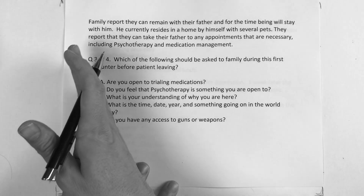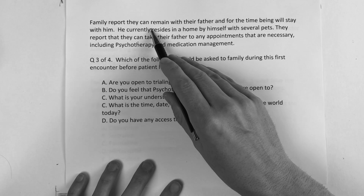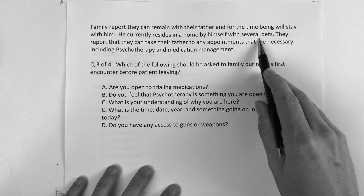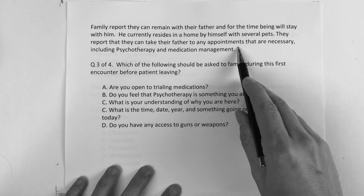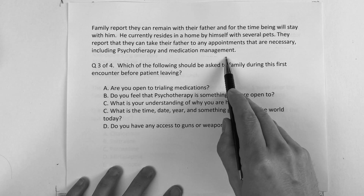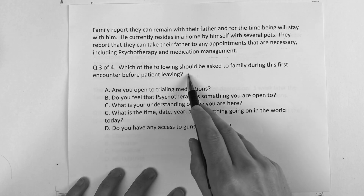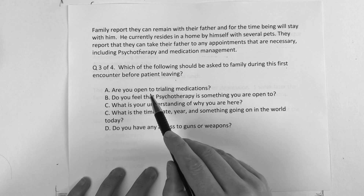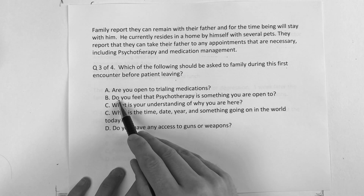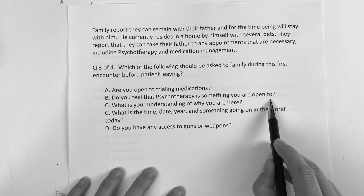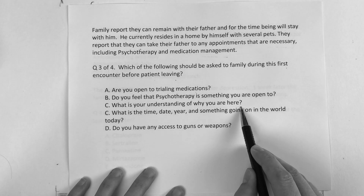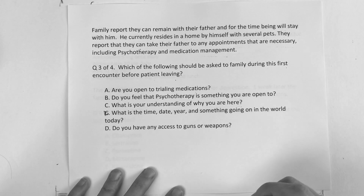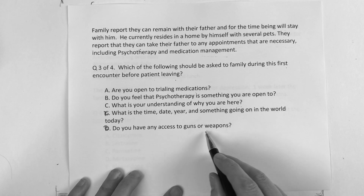Question number three — as we take this patient from A to Z — the family reports that they can remain with their father and will stay with him for the time being. He currently resides in a home by himself with several pets. They report that they can take their father to any necessary appointments, including psychotherapy and medication management. The question is: which of the following should be asked to the family during the first encounter before the patient leaves? Is it A, are you open to trialing medications? B, do you feel that psychotherapy is something you are open to? C, what is your understanding of why you are here? D, what is the time, date, and year? Or E, do you have any access to guns or weapons?